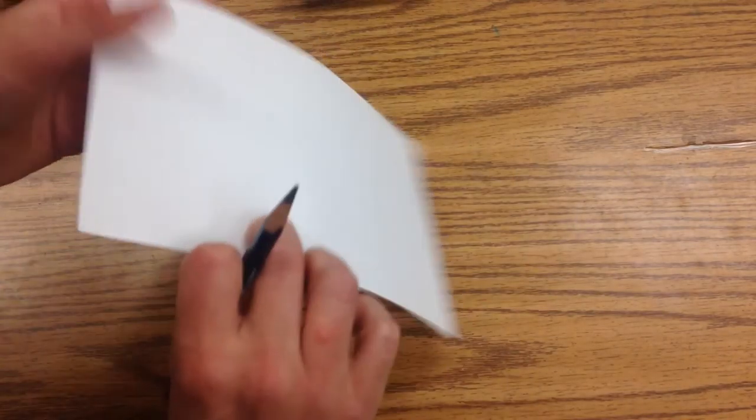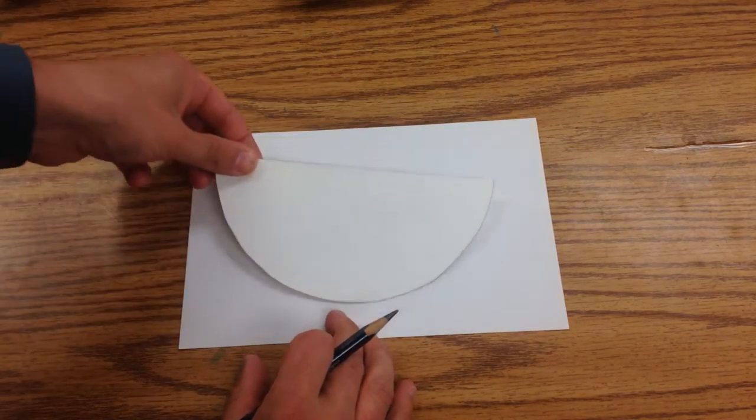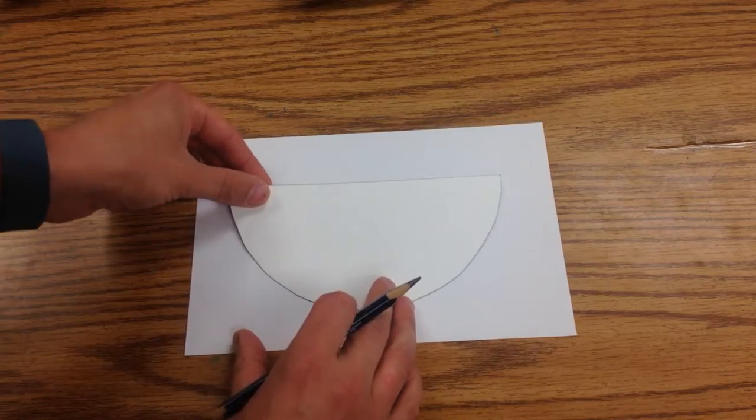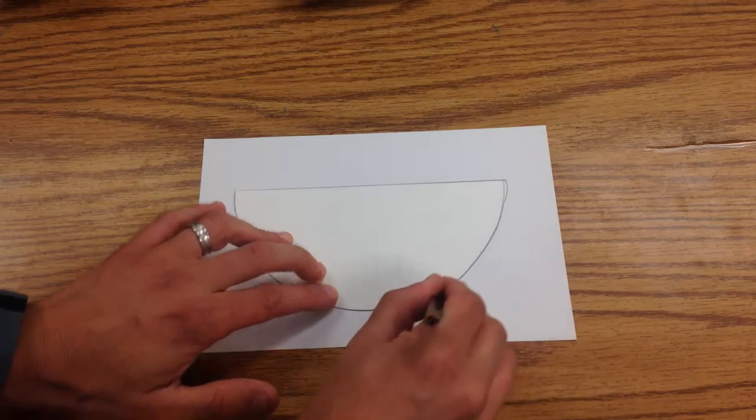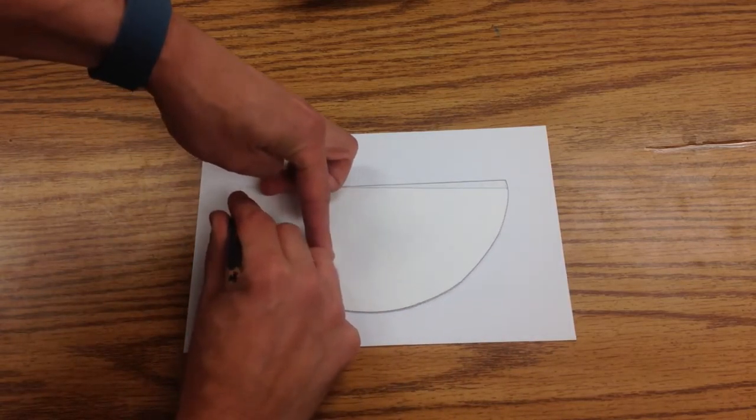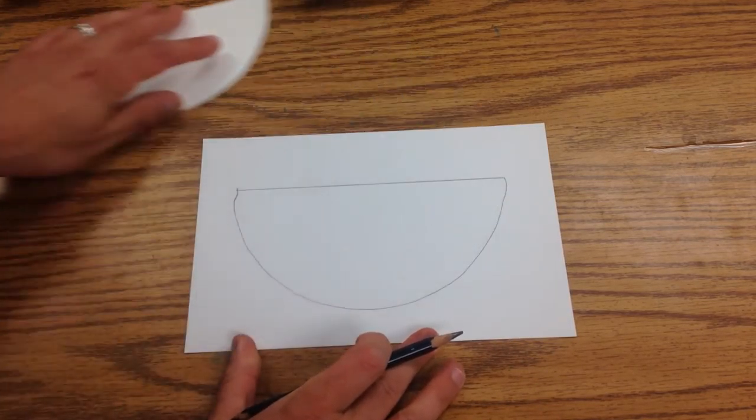Then I'm going to turn it over and I'm going to use this template. And that's shaped like a half circle and I'm just going to run my pencil around the edge. Just like that.